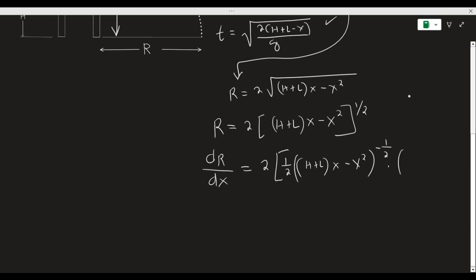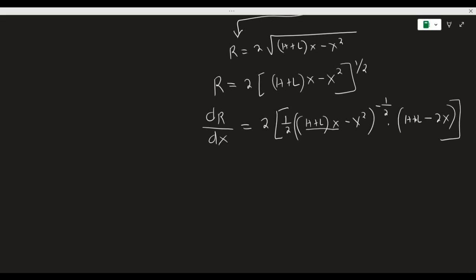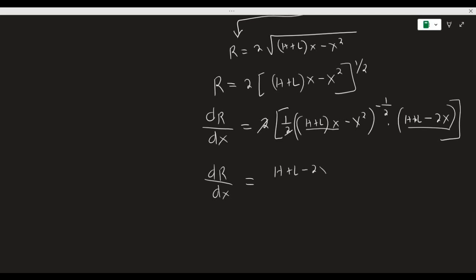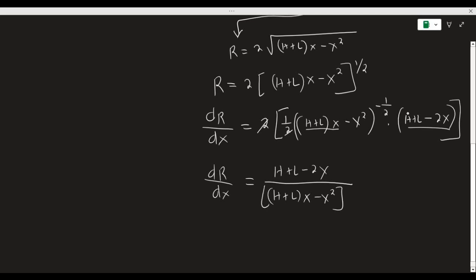We then multiply the result by the derivative of the inside function. The derivative of xh + lx is h + l, and the derivative of negative x² is negative 2x. Simplifying, we can cancel the 2, so the derivative of r with respect to x equals (h + l − 2x) in the numerator, with (xh + lx − x²) raised to the power of one half in the denominator — bringing the negative exponent term down to make the exponent positive.